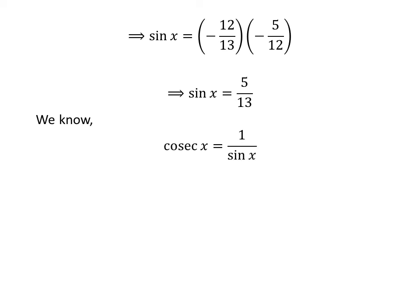We know 1 upon sine of x is equal to cosecant of x. So cosecant of x is equal to 1 upon 5 upon 13, which equals 13 upon 5. Thus, we have found the values of all other 5 trigonometric functions.